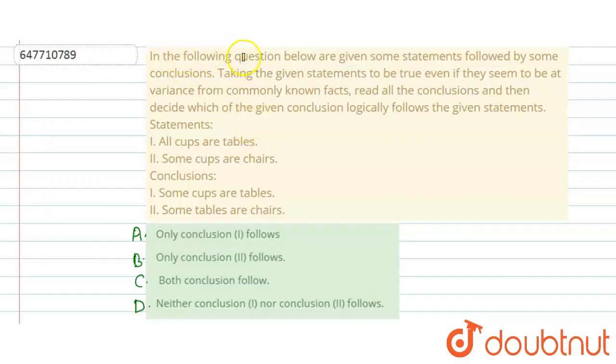Hello everyone, the question says that in the following question below are given some statements followed by some conclusions. Taking the given statements to be true even if there seems to be a variance from commonly known facts, read all the conclusions and then decide which of the given conclusions logically follow the given statements.